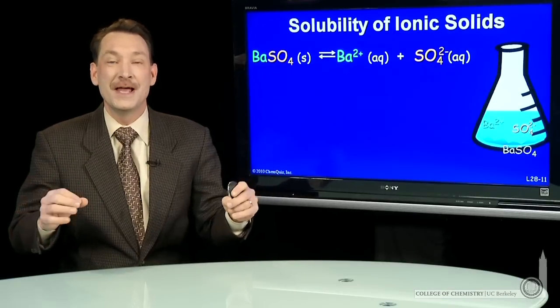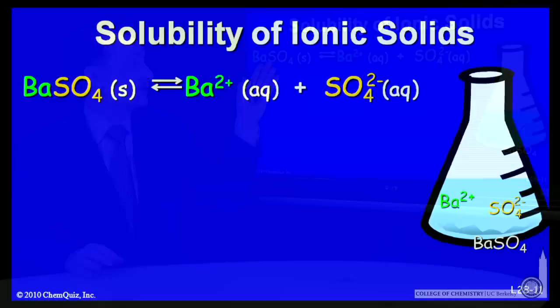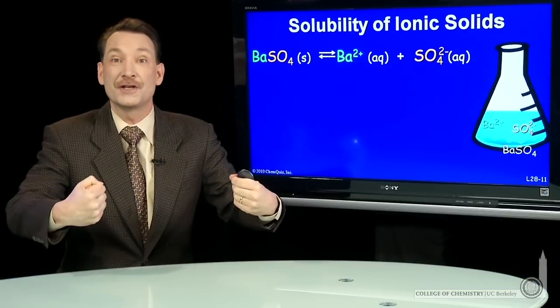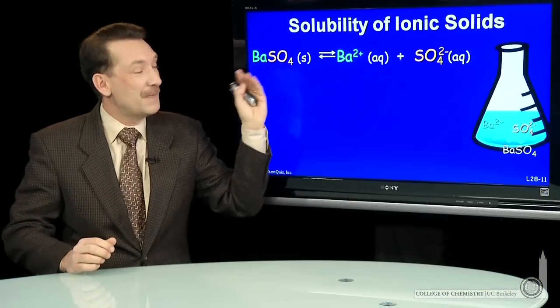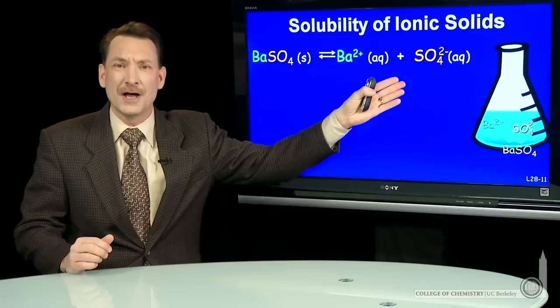One form of heterogeneous equilibrium is solids dissolving in liquids. Here I've written a reaction for barium sulfate solid dissolving to form the barium ions and the sulfate ions. It's an ionic solid—it breaks apart into two ions. But barium sulfate is only sparingly soluble. It doesn't dissolve very much.